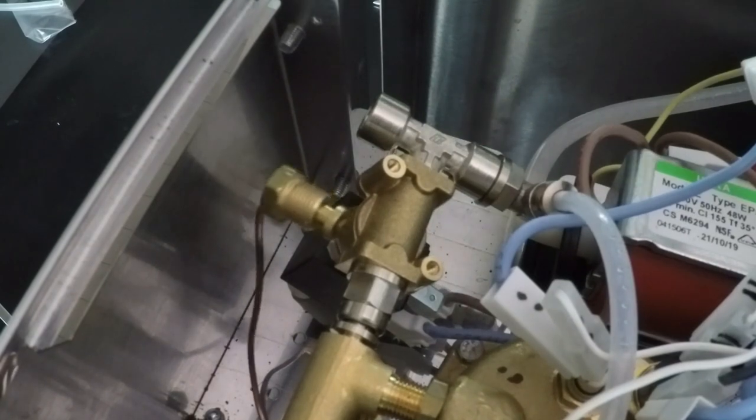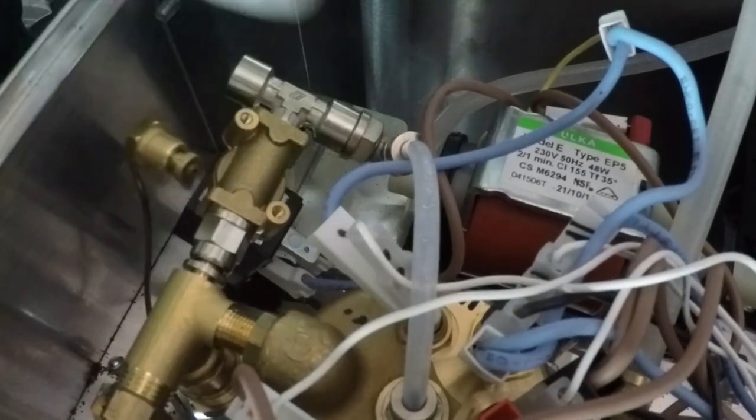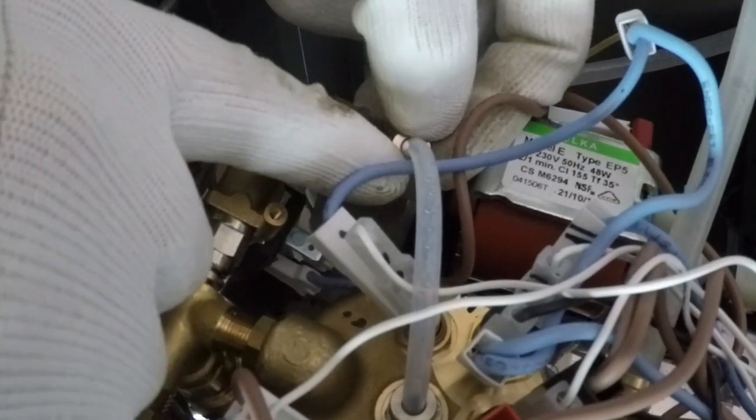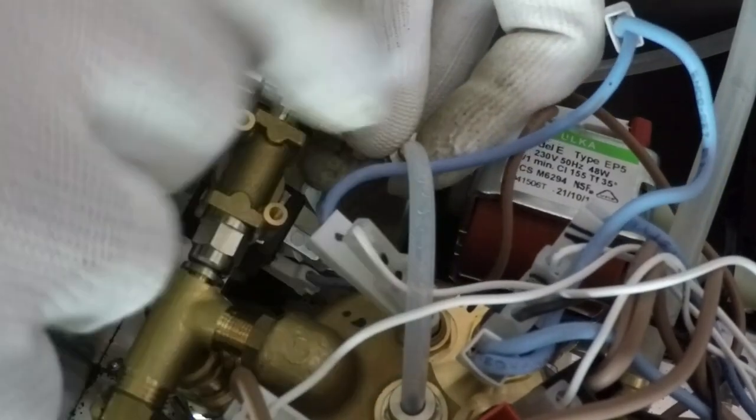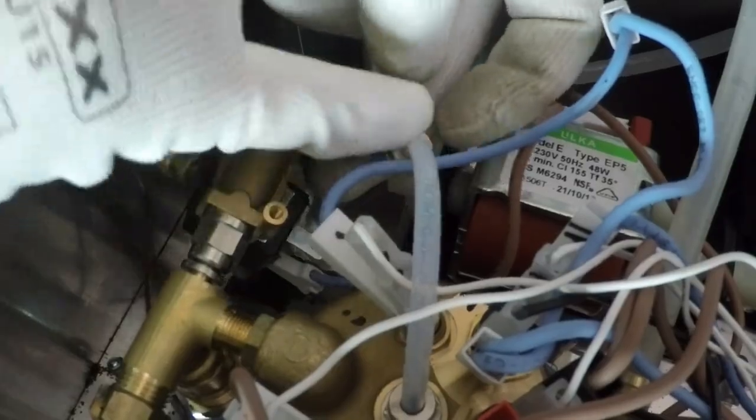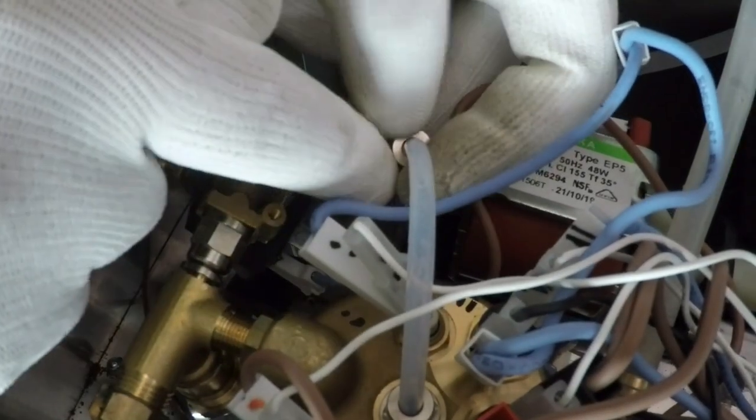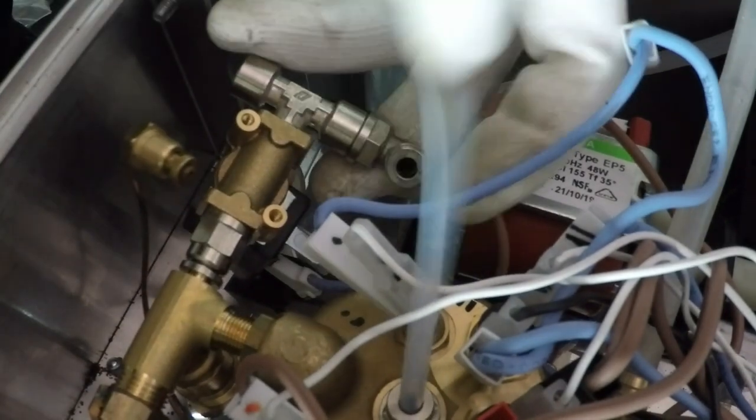Remove the adjustable wrench key. Remove this tube from this fitting. Push the ring and pull the tube.